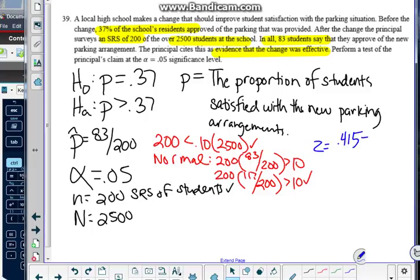I subtract from that p naught. What was supposed to be true in my claim, 37% are satisfied. Divide that by our standard deviation. Remember that we use our p naught in our numerator here.